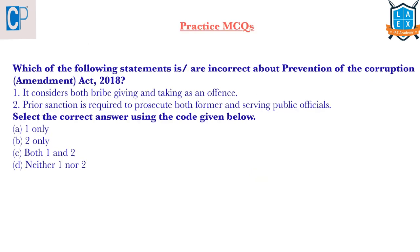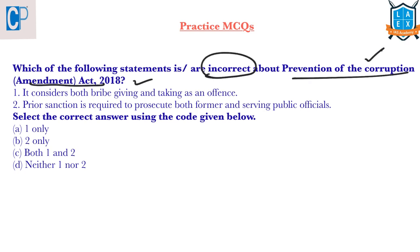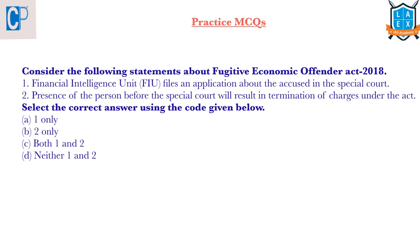Now let's see today's practice questions. The first question asks which of the following statements is/are incorrect about the Prevention of Corruption Amendment Act of 2018 — this will be explained in tomorrow's video. The second question asks to consider statements about the Fugitive Economic Offenders Act of 2018. Try to answer these two questions and post your answers in the comment box. In tomorrow's video we will see a detailed explanation, covering two of the acts mentioned in the previous article. This is all for today, thank you.